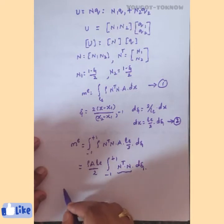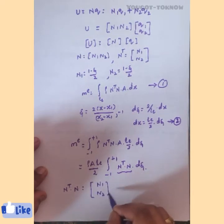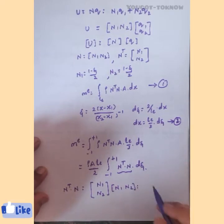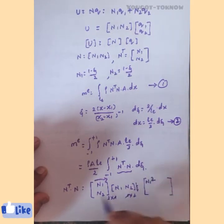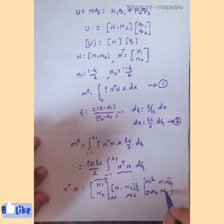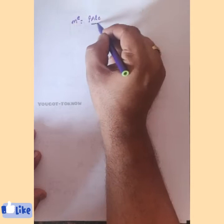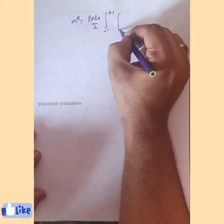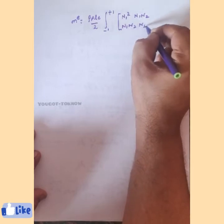Now we compute N-transpose times N. N-transpose is a 2×1 column [N1; N2] and N is a 1×2 row [N1 N2], giving a 2×2 matrix. The result is: [[N1², N1·N2], [N2·N1, N2²]]. Substituting back, Me equals rho·A·Le/2 times the integral from minus 1 to plus 1 of [[N1², N1·N2], [N1·N2, N2²]] d-zeta.